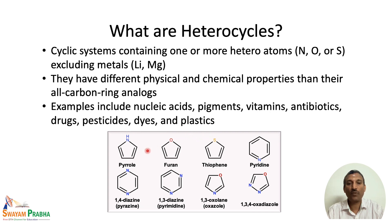Here we have some examples of various heterocyclic compounds. The first is pyrrole — a five-membered heterocyclic compound containing one heteroatom, nitrogen. We have furan, which has oxygen as the heteroatom. We have thiophene, which has sulfur as the heteroatom. These are the three five-membered ring compounds we will be studying in this and the next few sessions.